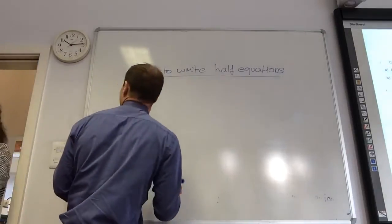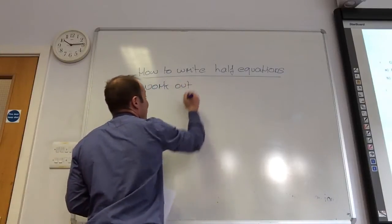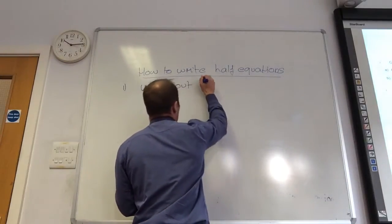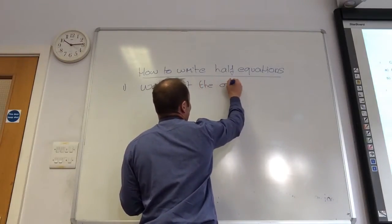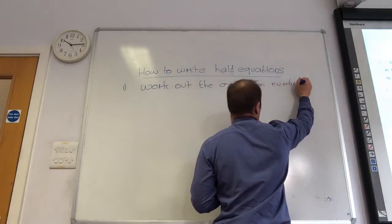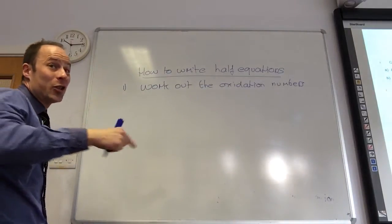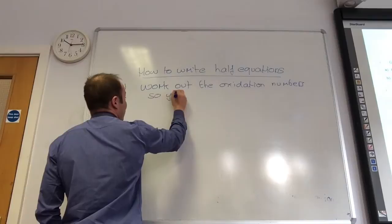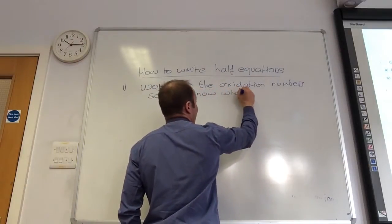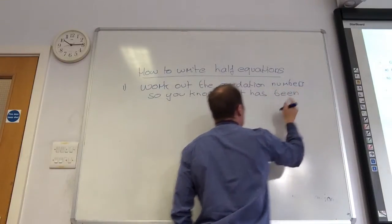The first thing you have to do is work out the oxidation states of what's in the equation. So, work out the oxidation numbers so you know what's been oxidized and what's been reduced.